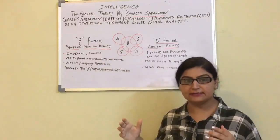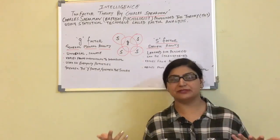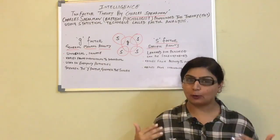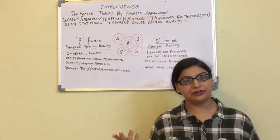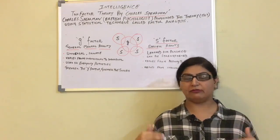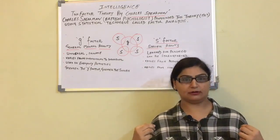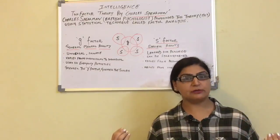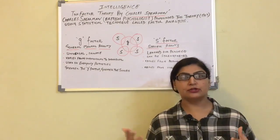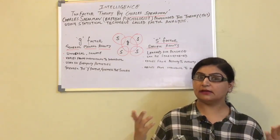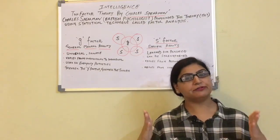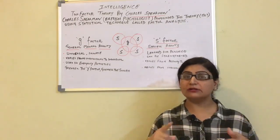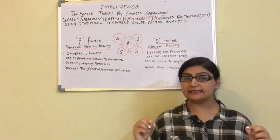General mental ability is basically your common sense that you use to understand the world around you. For example, I am teaching you something and you are acquiring and learning it — this is cognitive activity. You are learning how to drive, how to swim, how to make decisions. All these cognitive abilities involve the G-factor. This is your general intelligence that you use to learn and understand complex objects, things, and ideas around you.